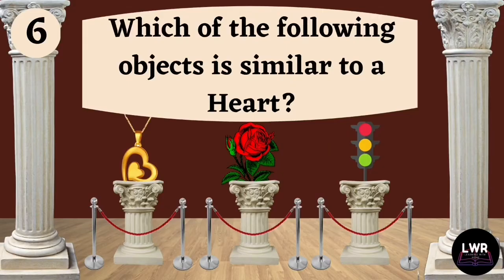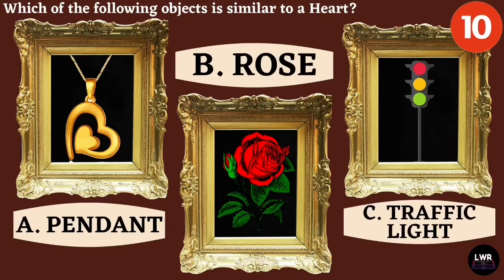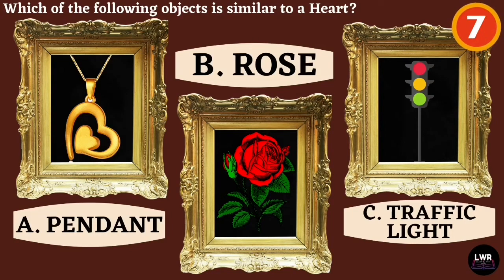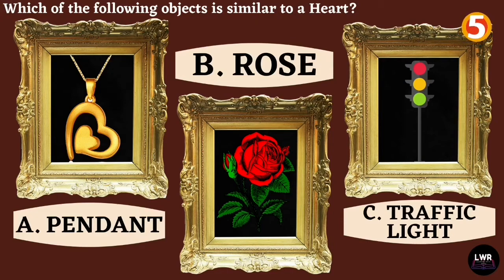Question number six. Which of the following objects is similar to a heart? Letter A, pendant. Letter B, rose. Or letter C, traffic light.